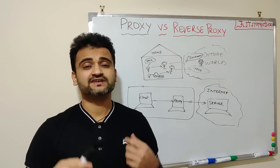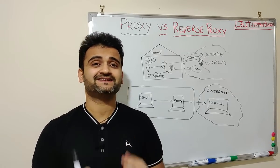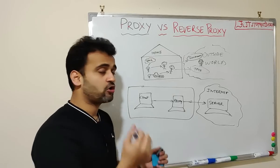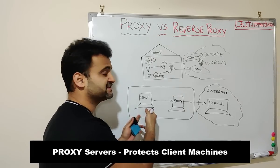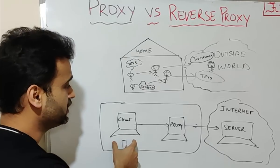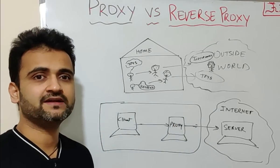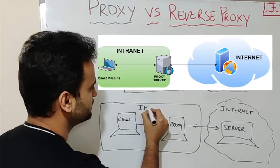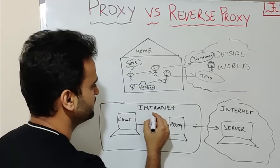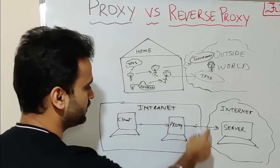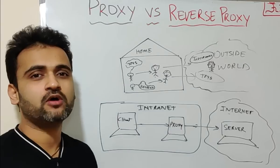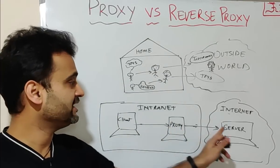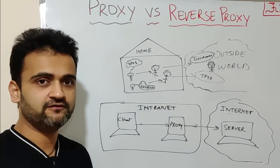Once we understand how a proxy works, it becomes easy to understand reverse proxy and the difference between them. As you can see in this diagram, a proxy server works for the safety and security of the client. Whenever you make any request from your client machine to hit a server outside the network — from your intranet to the internet — the proxy is the interface through which you send that request, and it goes to the internet and gets the data for you.